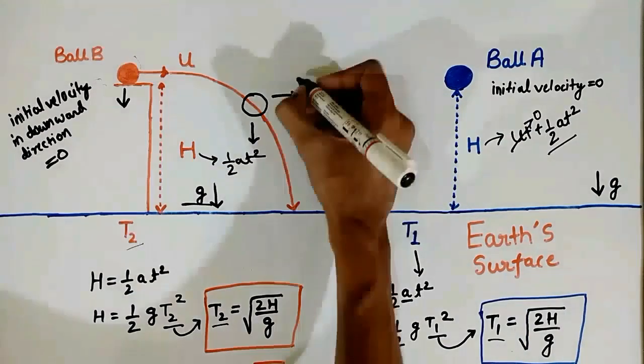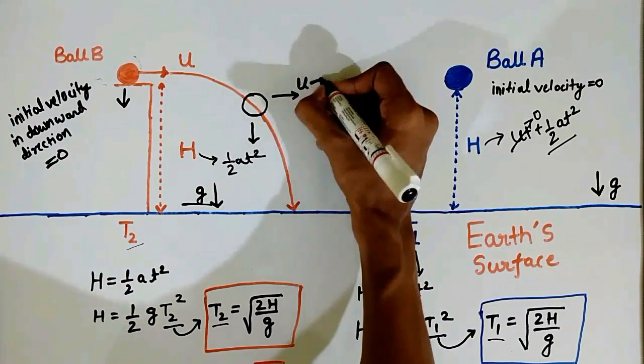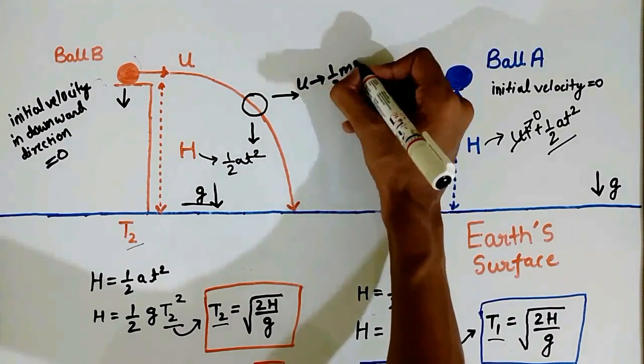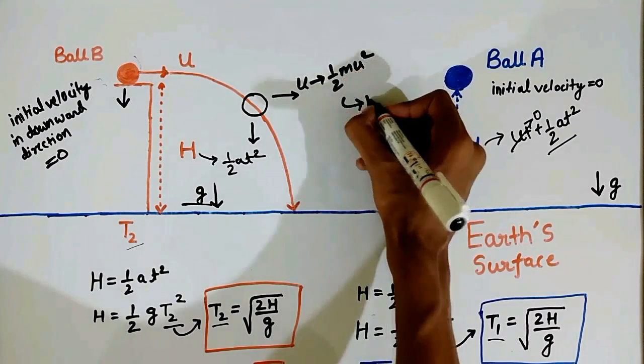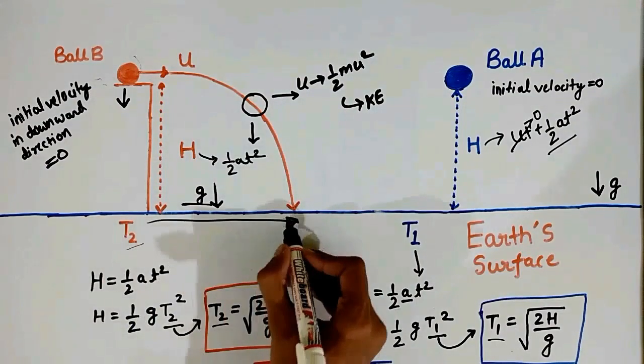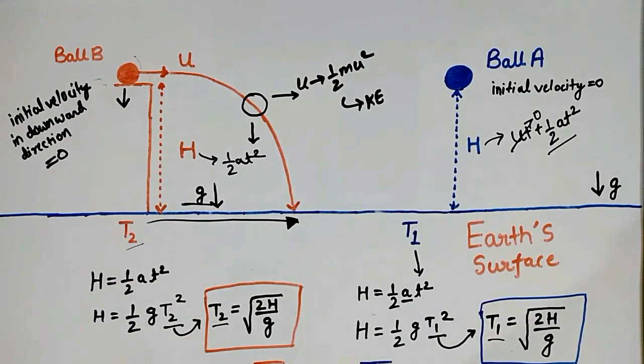As far as the initial velocity of ball B in direction parallel to the earth's surface is concerned, it will just provide the kinetic energy to ball B to travel the distance parallel to the earth's surface.